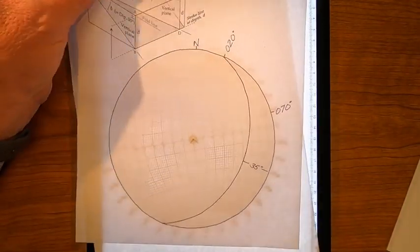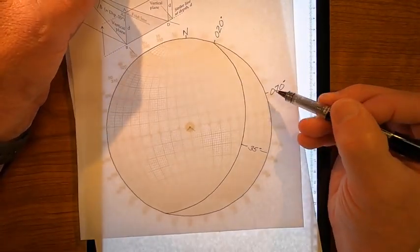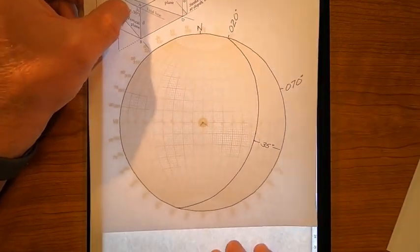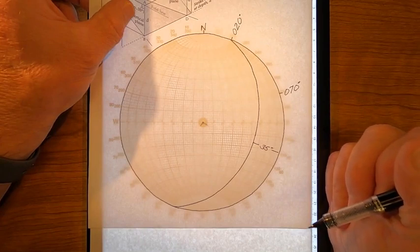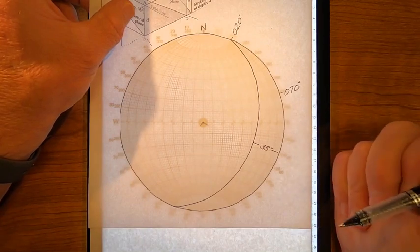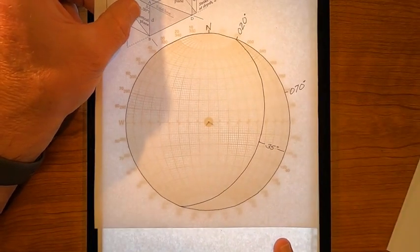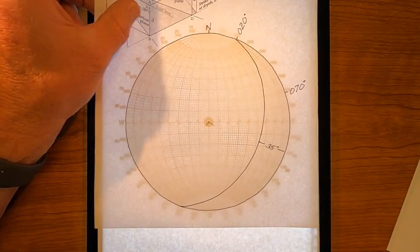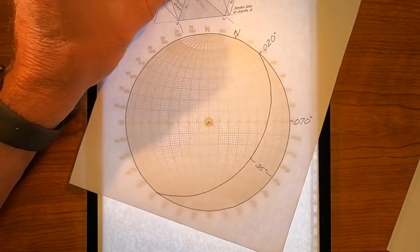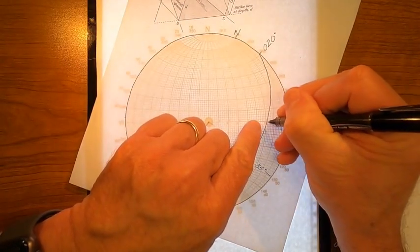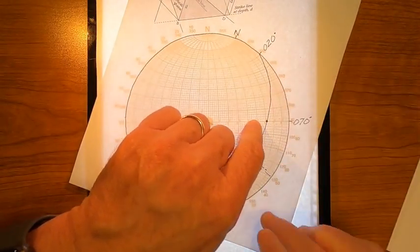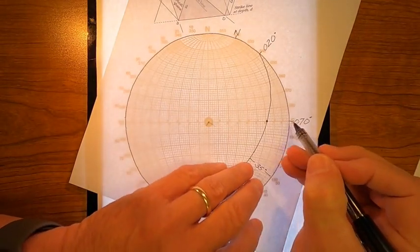Now, I need to find the apparent dip in this direction, 070. That's trivial. All I need to do, I'll just rotate that down to the east-west axis. If I want, I can put a dot here.